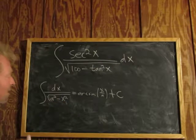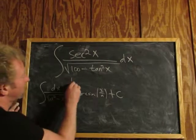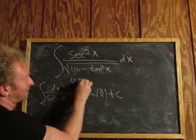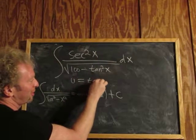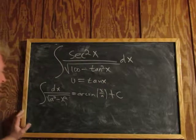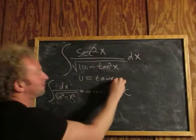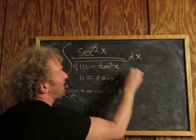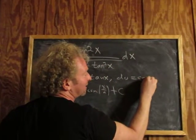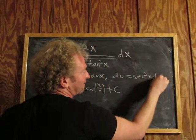So you start by making a u substitution. So in this problem, we'll start by letting u be equal to tan x. And so then du, the derivative of tangent, is conveniently secant squared. So secant squared x dx.